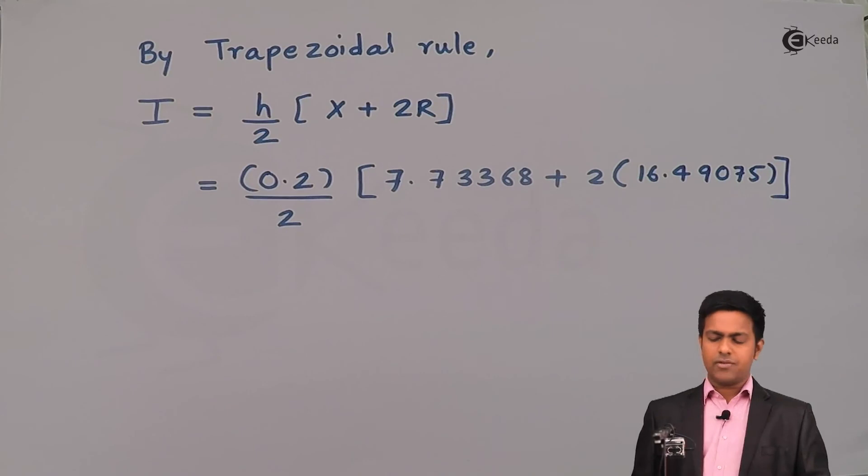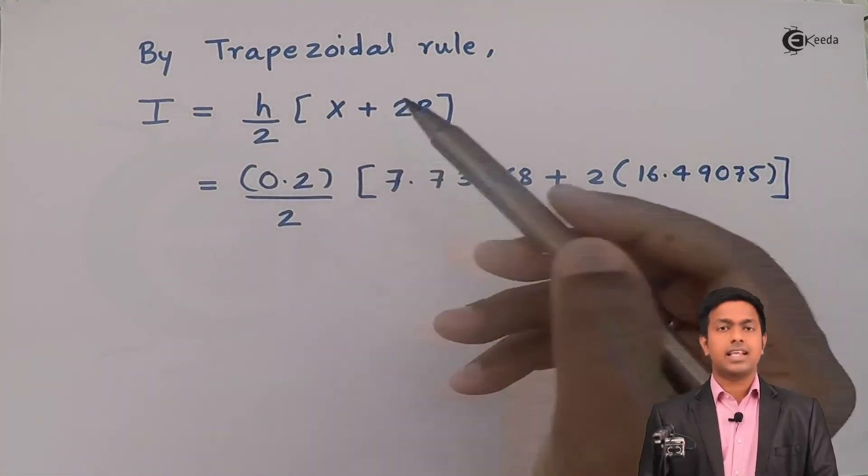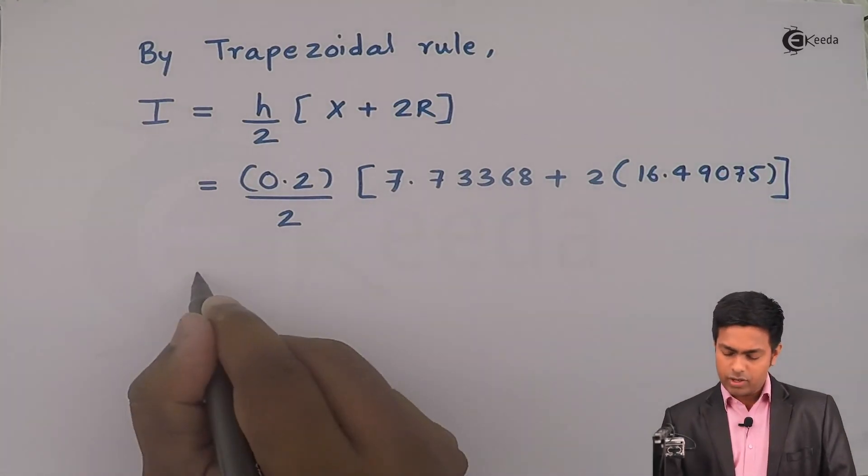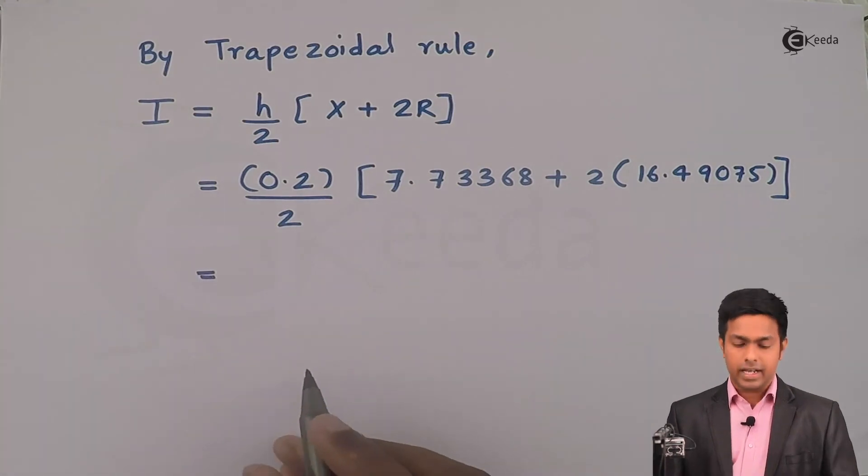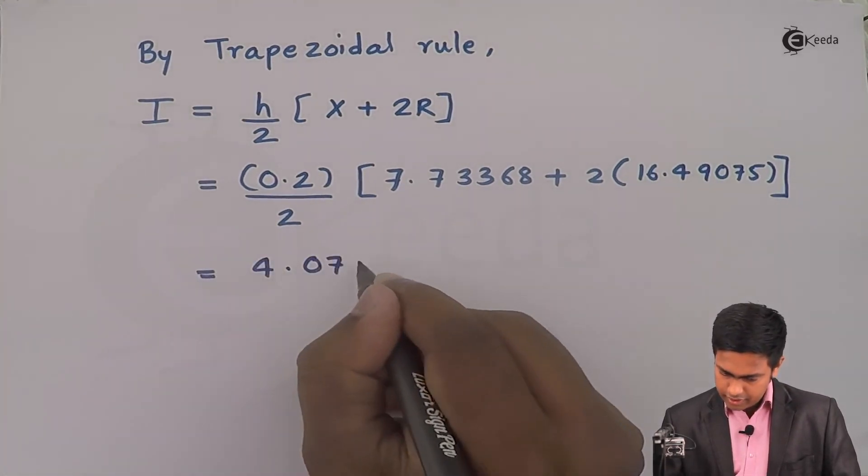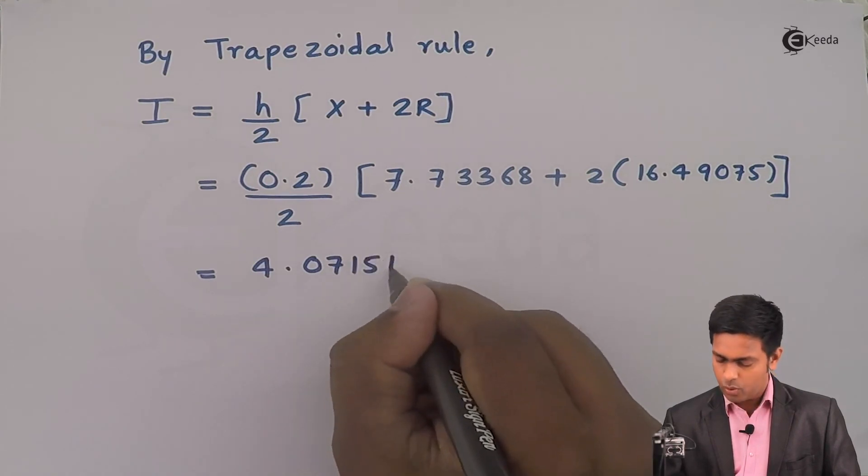So here I have substituted the value of h, X, and R. Now let's again find out the value of I on calculator. So if you put all these values in calculator you will get it as 4.071518.